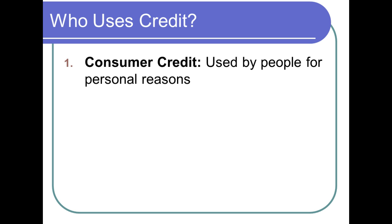So who uses credit? Consumers. We use it for personal reasons, to buy stuff. We might get a loan for a car, for a house, we might use credit cards to purchase items. So consumer credit is one type of credit.